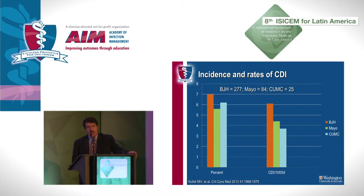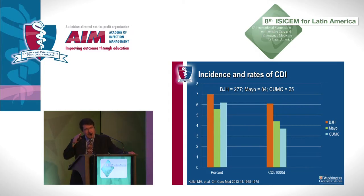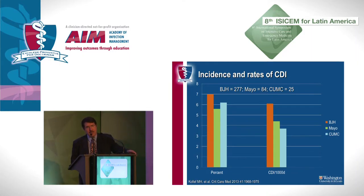When we looked at the three hospitals, the more common occurrence numerically was at Barnes-Jewish Hospital. But when we looked at it per 1,000 patient days, there was a stratification that correlated with severity of illness — the hospital with the highest severity of illness seemed to have a higher occurrence rate of the infection.